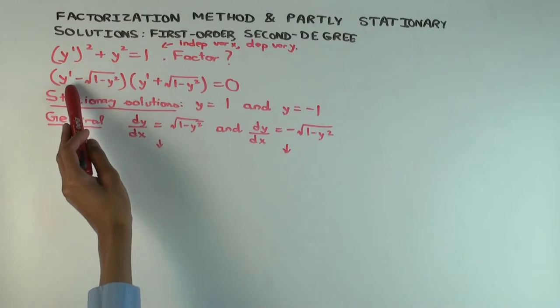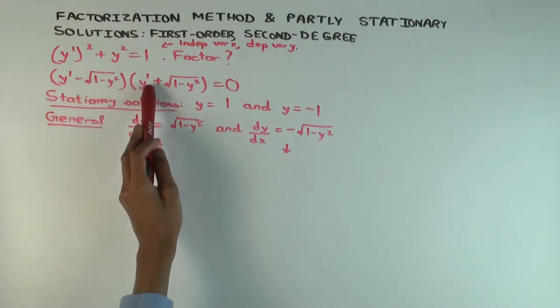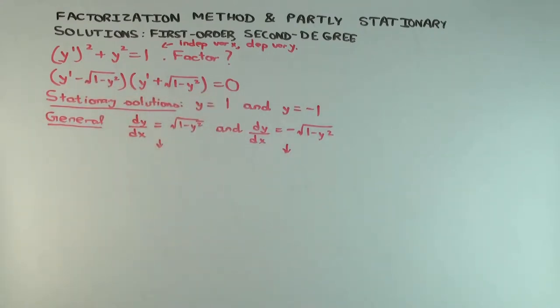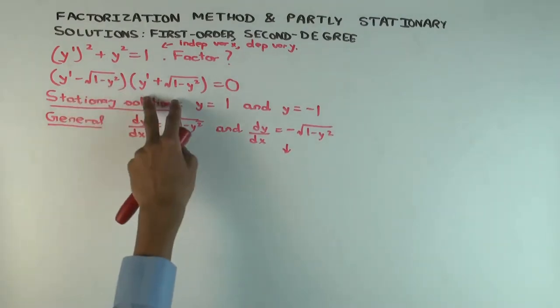You have to use radicals. So Y prime minus square root of 1 minus Y squared and Y prime plus square root of 1 minus Y squared equals 0. You basically resolve either this is 0 or this is 0.